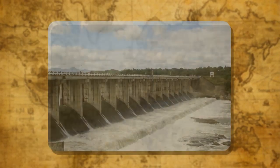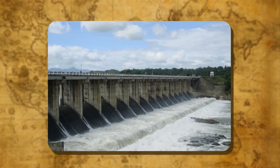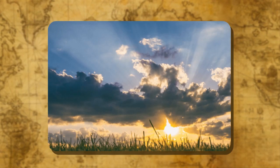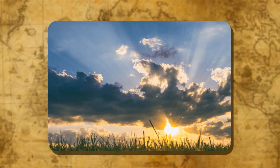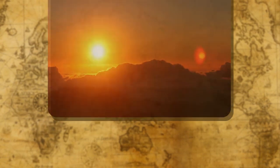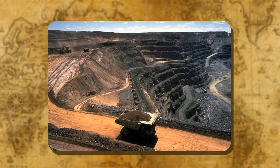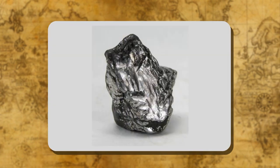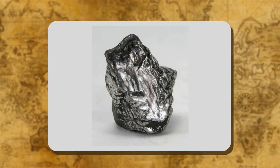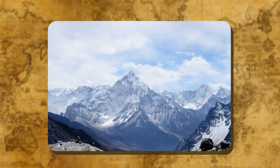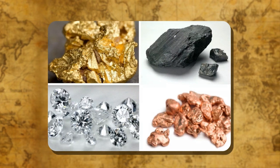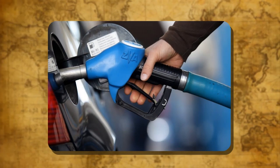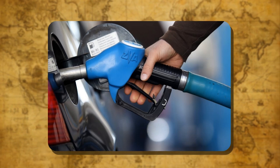On the basis of distribution, resources are distributed unevenly. Resources can be ubiquitous or localized. Ubiquitous resources are found everywhere, for example, the air we breathe and solar energy. Localized resources are found in certain places only, like copper, tin, and iron. The distribution of natural resources mainly depends upon terrain, climate, and altitude. Availability of mineral resources mainly depends upon the geological structure of a particular area.